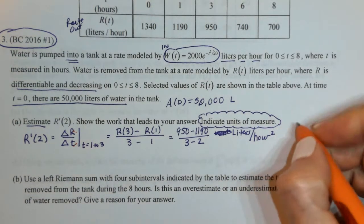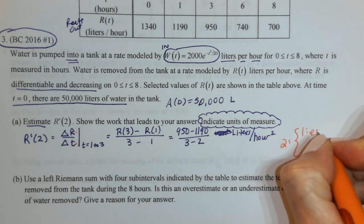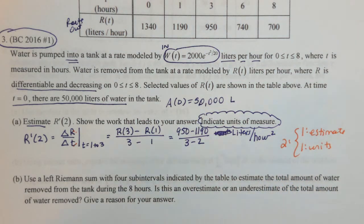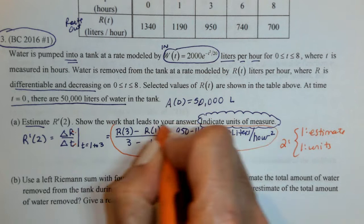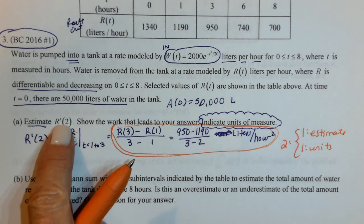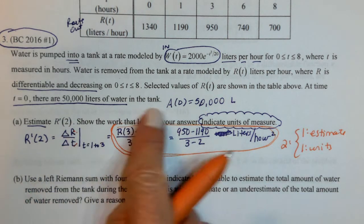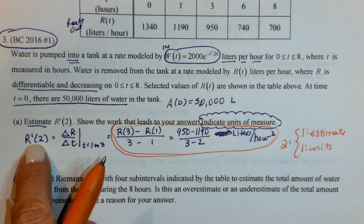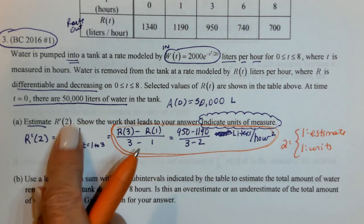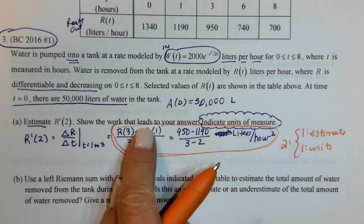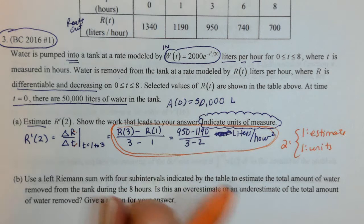That was worth two points: one point for the estimate, one point for the units. The minimum you need to show is just that calculation. You do not have to label what you're finding since they only asked for one thing — but you do have to show the difference quotient and give units.